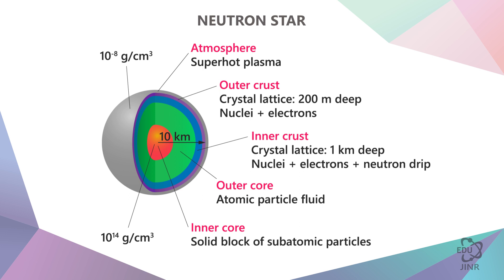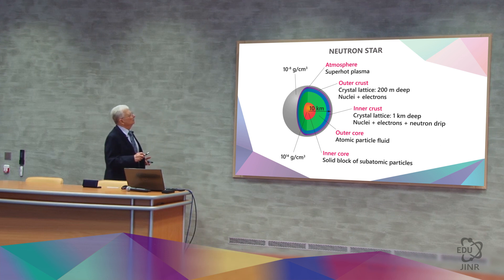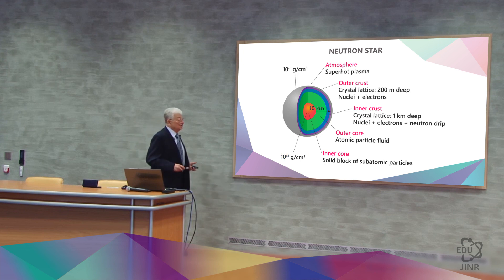After that, a neutron star is obtained in the center, the formation of which has a radius of only 10 kilometers, the mass of which is approximately equal to the mass of the Sun with a high density. On the star's surface, there is an ephemeral layer of 10 to the power of minus 8 grams per cubic centimeter. But in the center, there is a tremendous density. And at this density, the matter is most likely in the form of quark-gluon plasma.